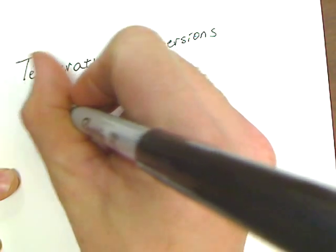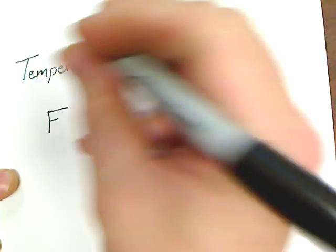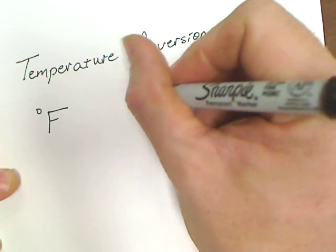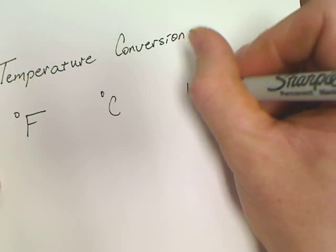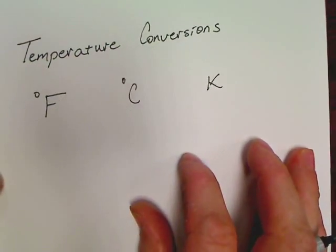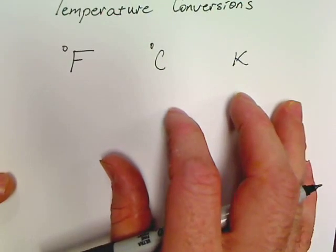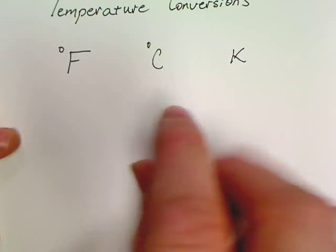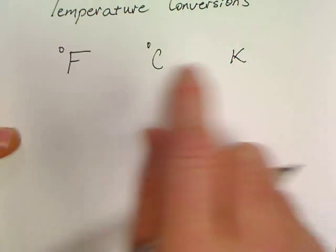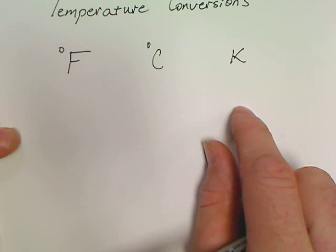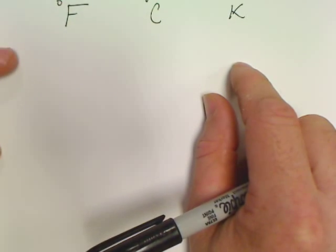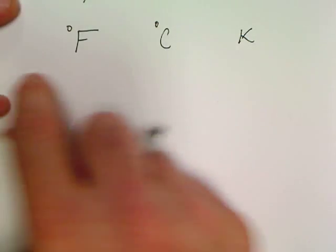What this video is going to be about is how do we convert the three different temperature scales, whether it's degrees Fahrenheit, degrees Celsius, or Kelvin. I'm still writing crooked for whatever reason, but anyway, I'll just twist the paper now so at least it looks straight. There are three different temperature scales and we will be able to convert between each one.